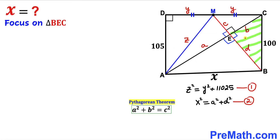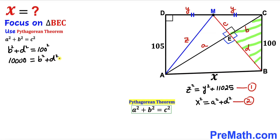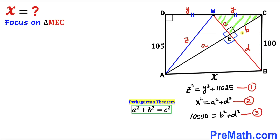Now focusing on right triangle BEC, whose side lengths are b, d, and the longest leg 100. Applying the Pythagorean theorem gives us b² + d² = 100² = 10,000. We call this equation number three.